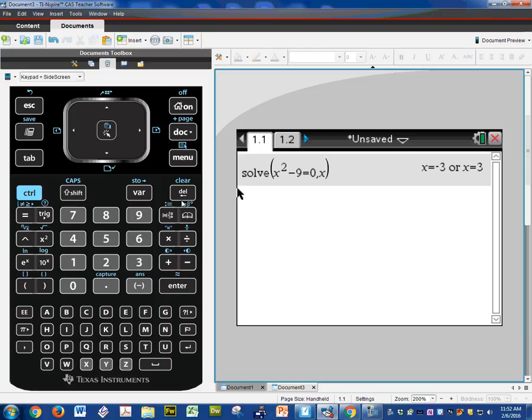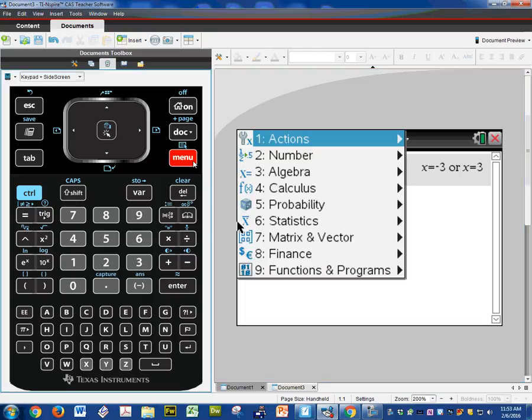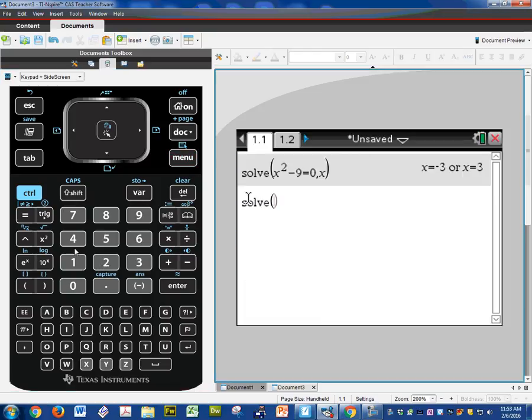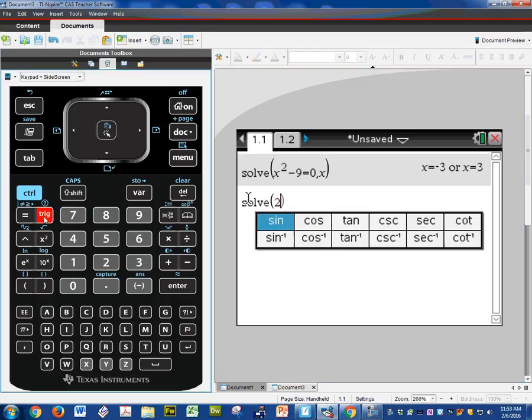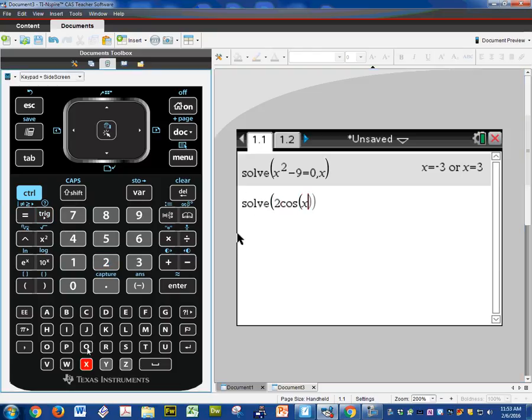What if it's a trig function? I personally do not recommend that we solve trig functions on this screen. And here's why. Alright. Let's suppose I want to solve 2 cosine x plus 1 is equal to zero, comma x. Now it's going to give me every x that makes this true. And since it's unbounded, it's going to have infinitely many answers. So here we go.